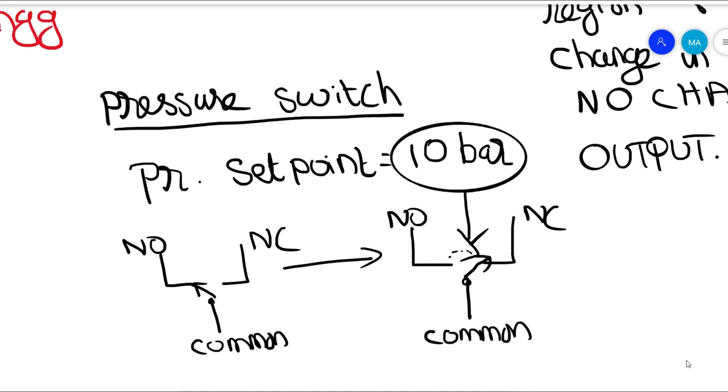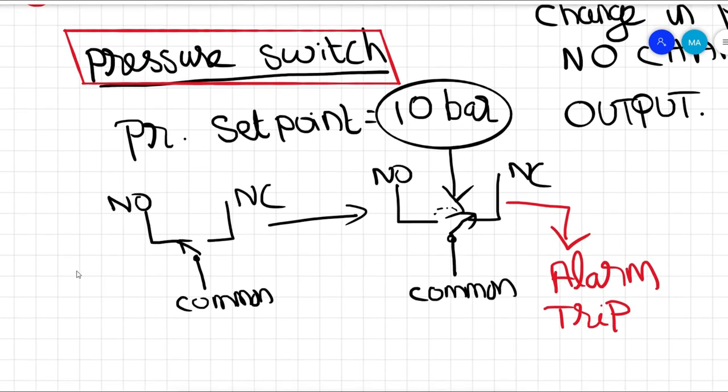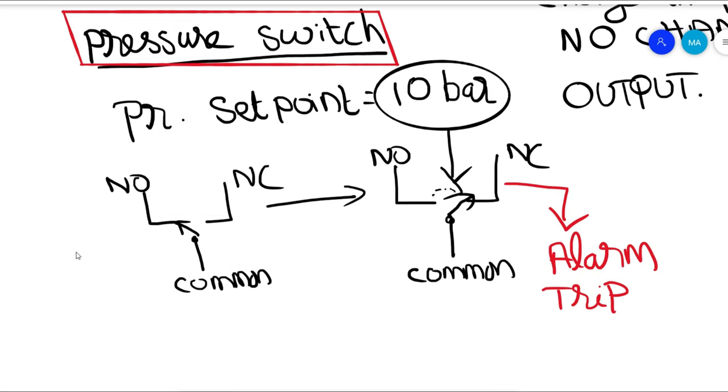This contact would either provide an output signal as an alarm or trip or any other control as per the process requirement. This is how your pressure switch works. So when the set pressure is achieved, the contact changes over, and by this way it provides an output signal to control the process parameter. So this is a basic function of a pressure switch.